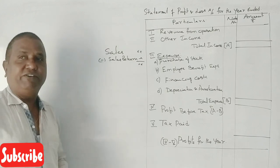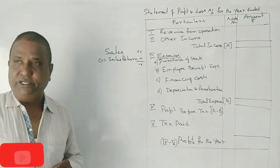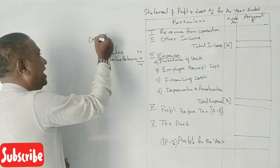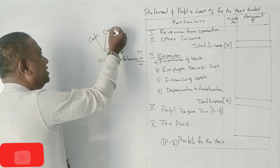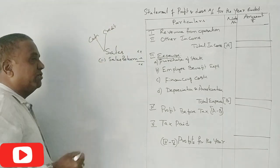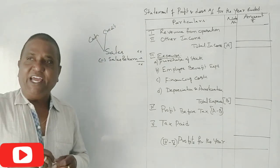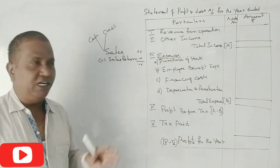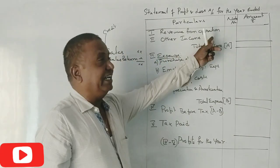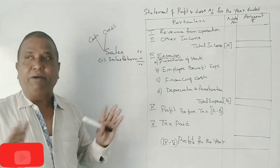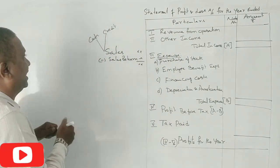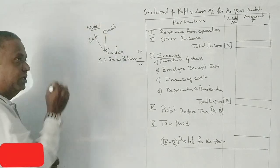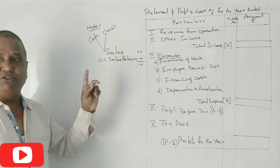What is Revenue from Operations? It includes Cash Sales and Credit Sales. Suppose we have a problem: Cash Sales are separate, Credit Sales are separate. Note Number 1: Cash Sales — 50,000.